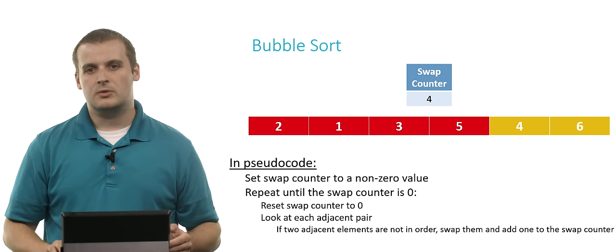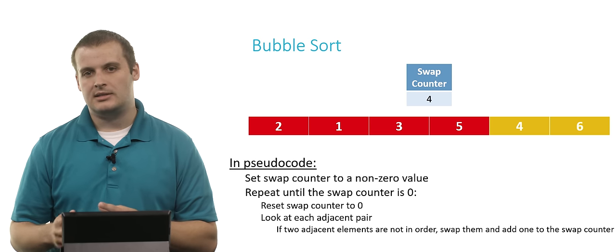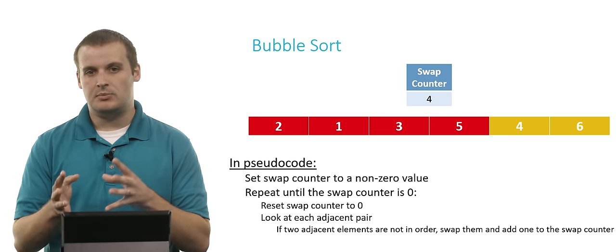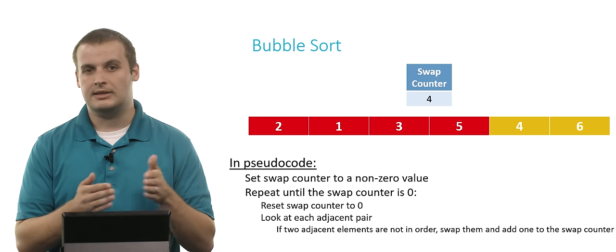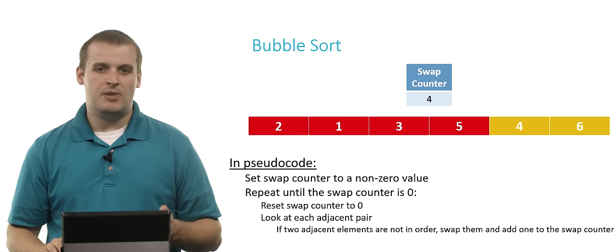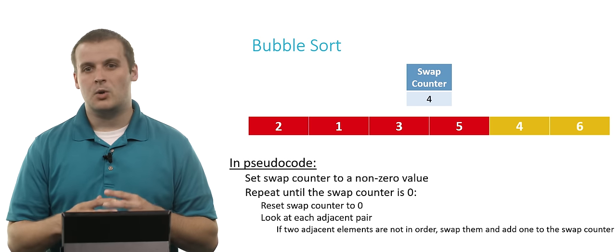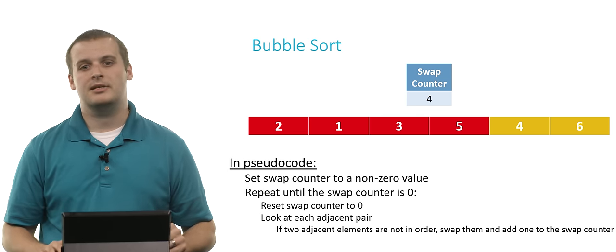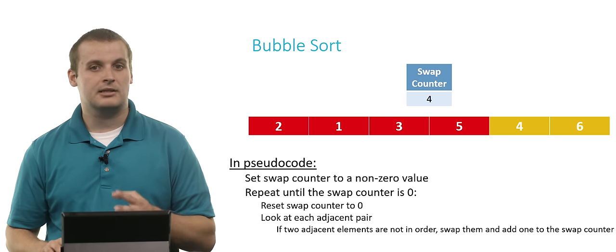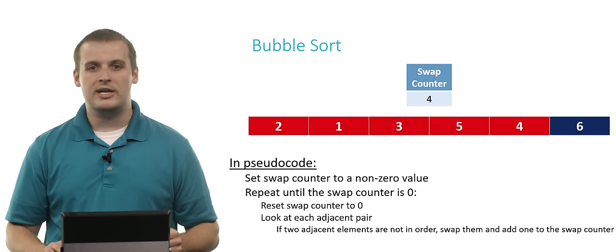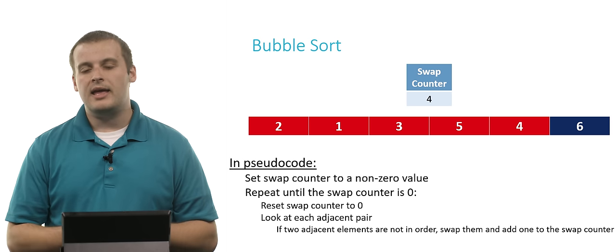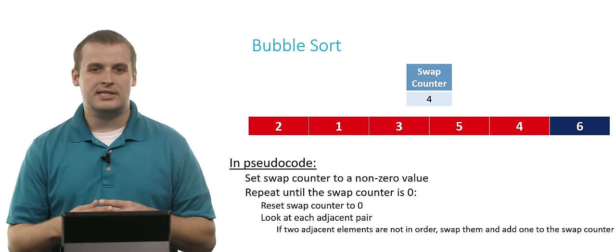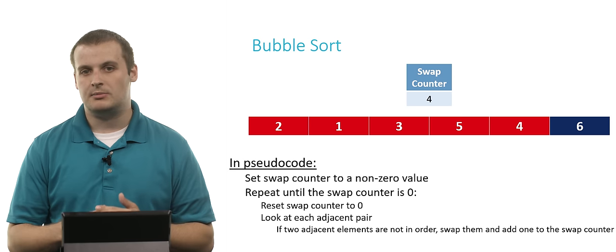Notice what's happened: we've moved six all the way to the end. In selection sort, what we did was move the smallest elements, building the sorted array from left to right, smallest to largest. In the case of bubble sort following this algorithm, we're actually building the sorted array from right to left, largest to smallest. We have effectively bubbled six — the largest value — all the way to the end. We can now declare that it is sorted, and in future iterations we don't have to consider six anymore.